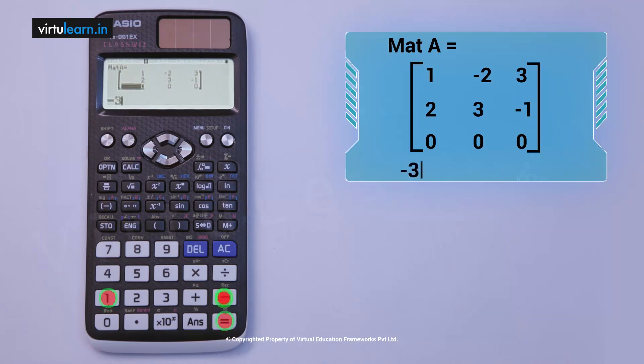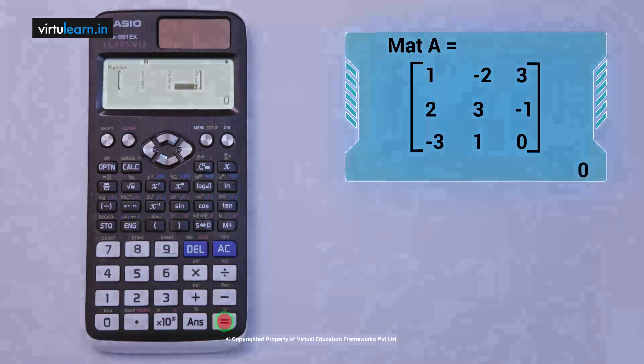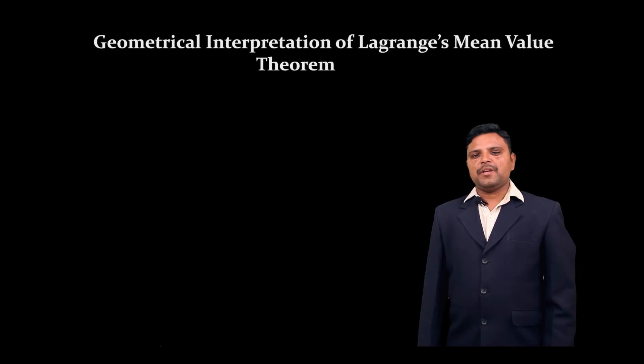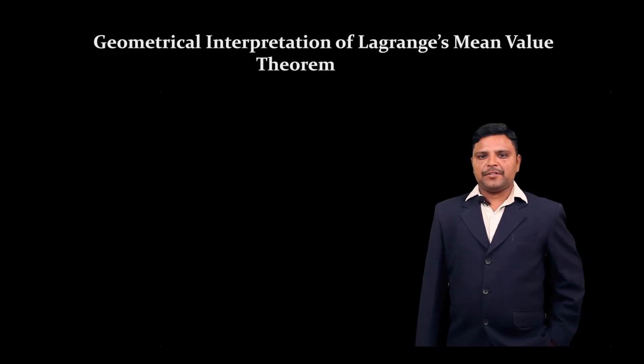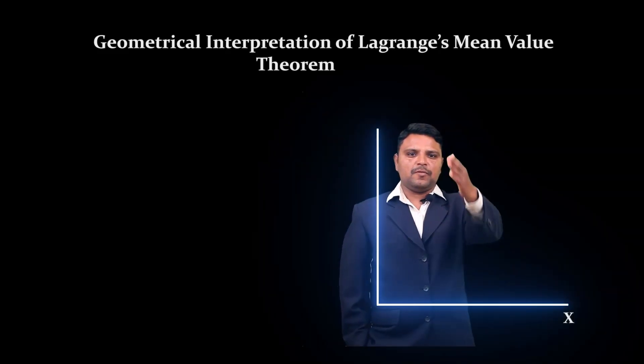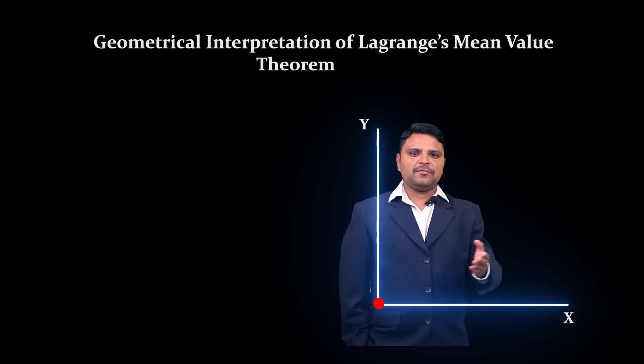Now, geometrical interpretation of Lagrange's Mean Value Theorem. You draw the graph of the given function y = f(x). This is the x-axis, this is the y-axis. The intersection of these two axes is origin O.